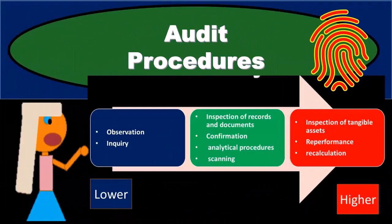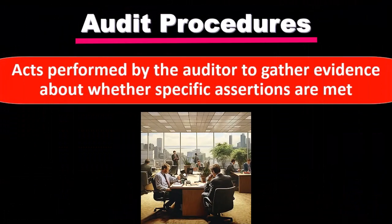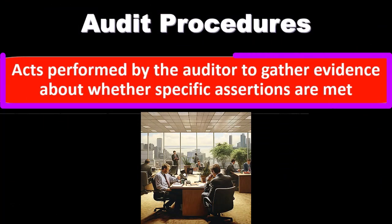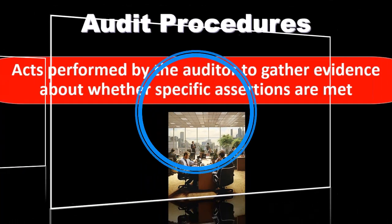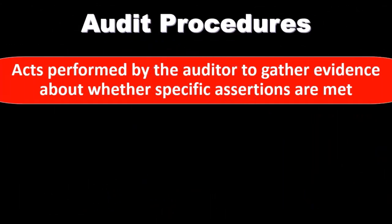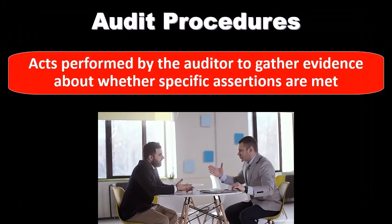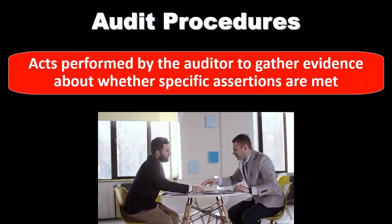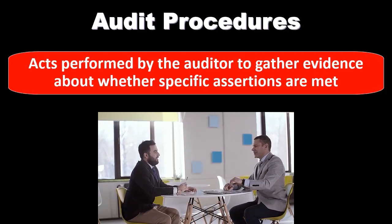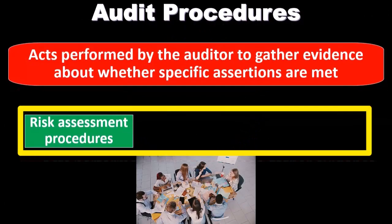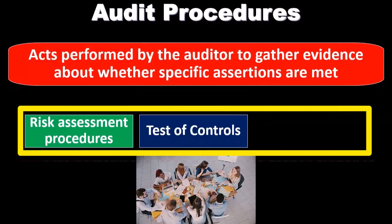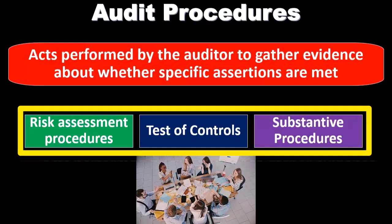Audit procedures are acts performed by the auditor to gather evidence about whether specific assertions are met. We take the full audit goal — to see if the financial statements are reported fairly — and break that up into specific assertions, typically related to specific transactions, disclosures, and accounts. We then apply our audit procedures to those specific assertions. The grouping of audit procedures includes risk assessment procedures, test of controls, and substantive procedures.